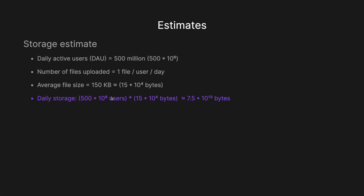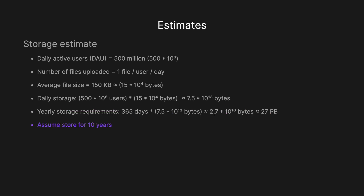Adding the exponents: 4 + 6 = 10, and 15 × 500 = 7500, divide by 1000 to get 7.5 × 10^13. For yearly storage, multiply by 365 to get roughly 2.7 × 10^16 bytes, which is about 27 petabytes. Assuming 10 years of storage, that gives a total of roughly 270 petabytes — a lot of data.